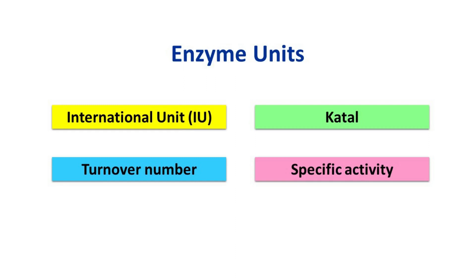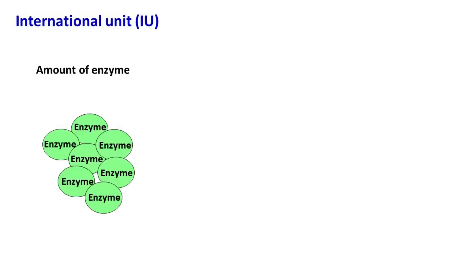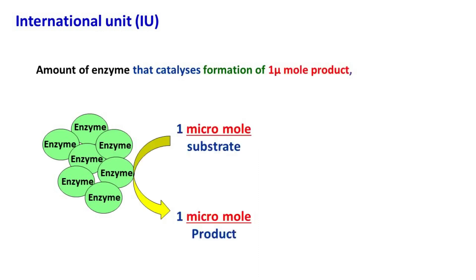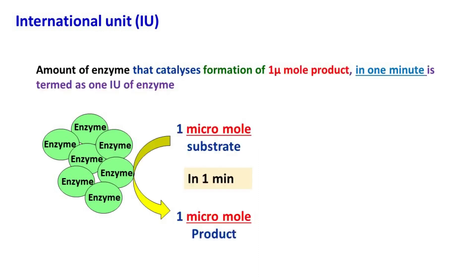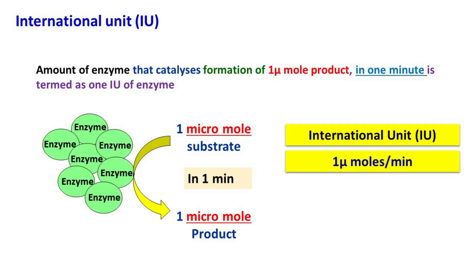Let's see the international unit. The international unit is defined as the amount of enzyme that catalyzes formation of 1 micromole of product in 1 minute. Hence, the international unit will have units of micromoles per minute.